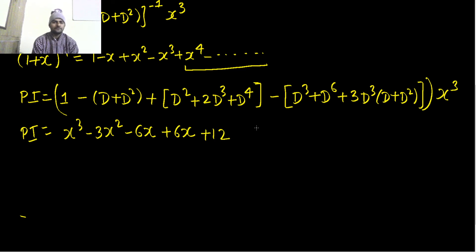Again D² x³ second derivative was 6x, third derivative was 6 multiplied by 2, fourth derivative 0, again third derivative was 6 so minus 6, sixth derivative was 0.